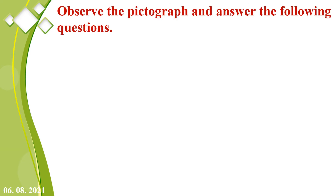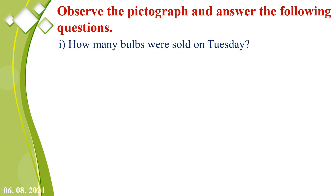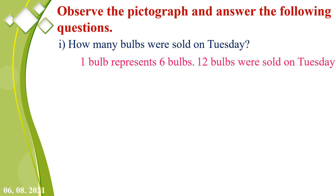Observe the pictograph and answer the following questions. First: how many bulbs were sold on Tuesday? From the pictograph, Tuesday has 2 bulbs. Since 1 bulb represents 6 bulbs, 2 into 6 we get 12. That means 12 bulbs were sold on Tuesday.